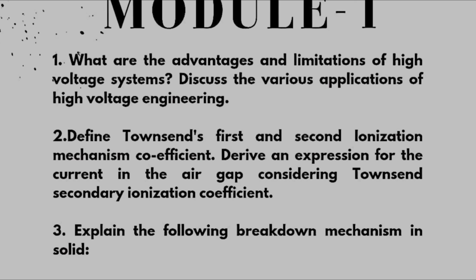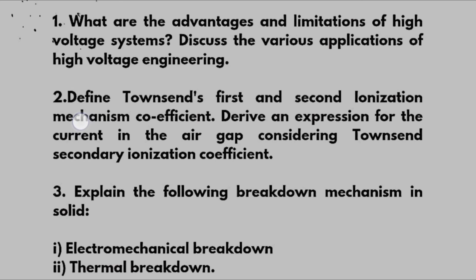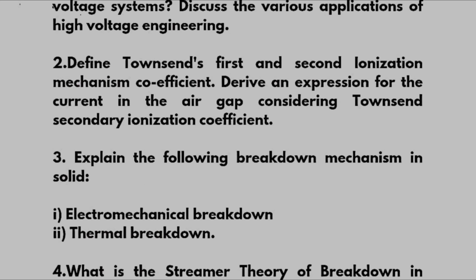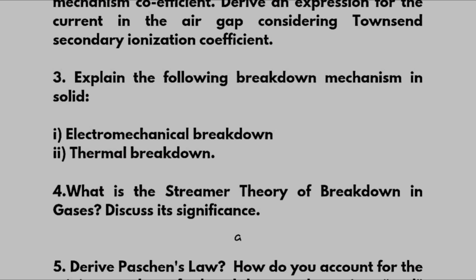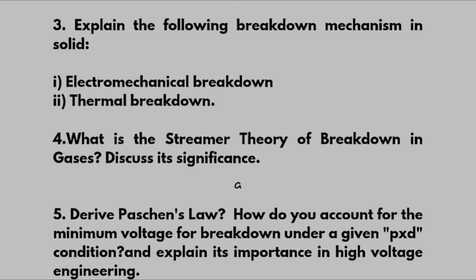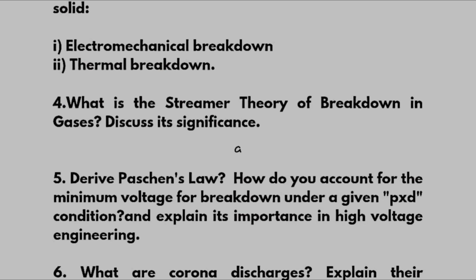Here we have eight important questions: What are the advantages and limitations of high voltage systems? Discuss the various applications of high voltage engineering. This is a super important question — most of the times VTU has asked: Define Townsend's first and second ionization coefficients and derive an expression for the current in the air gap considering Townsend's secondary ionization coefficient. Next, explain the following breakdown mechanisms in solids: electrochemical breakdown and thermal breakdown.